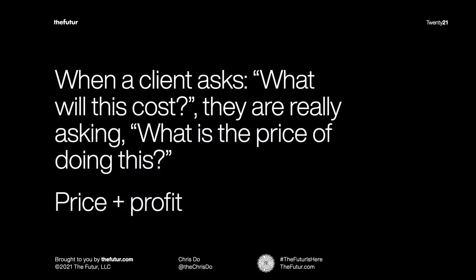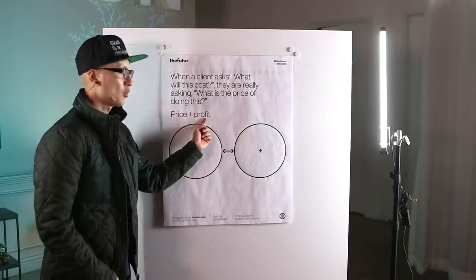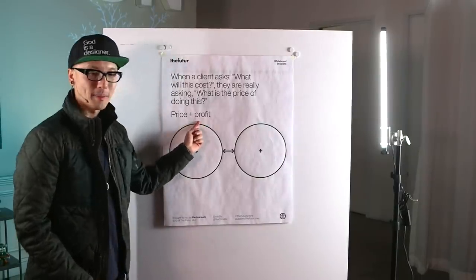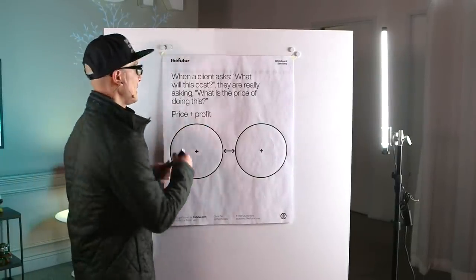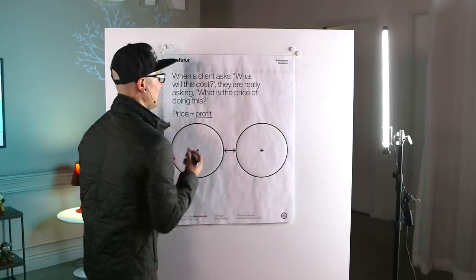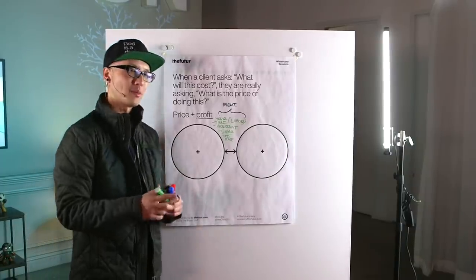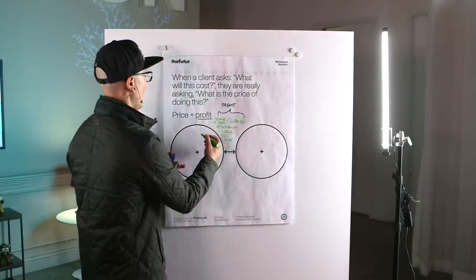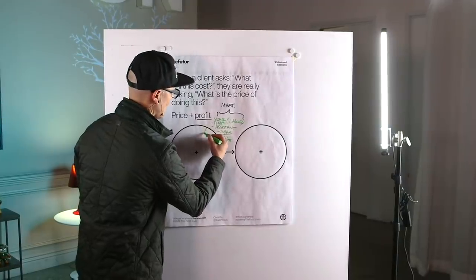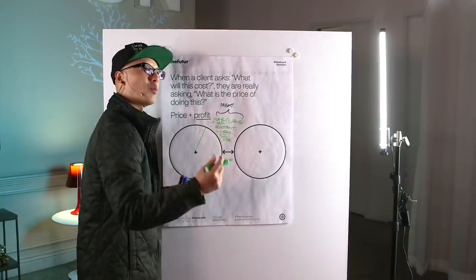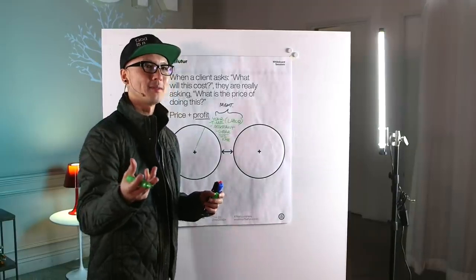Where does profit come from? When a client asks what will this cost, they're asking what is the price. We feel a little sheepish to talk about profit in front of them, but it is implied — profit is implied. So how much profit should you include? There is no easy answer, but let's put it into this equation. Let's assume: what's a reasonable profit amount to add? You might hear 15%, 20% — so we're going to call this profit, and say it's 25% of this pie.